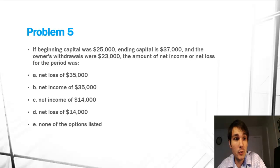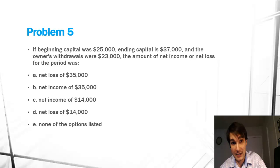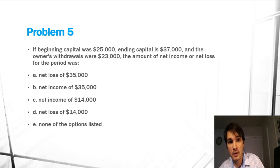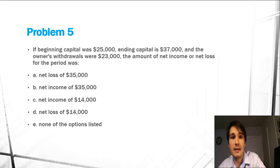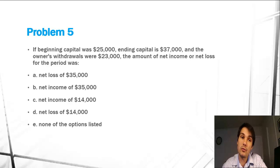Hello everyone, this is Devon Coombs and today we will be talking about Problem 5 in CSUN's Financial Accounting Gateway Example Problems. It's pretty much just talking about how to calculate net income through beginning capital, ending capital, and owner's withdrawals.